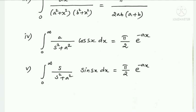Result 4: integral from 0 to ∞ of [1/(a²+x²)]·cos(xx) dx equals (π/2)·e^(−ax). Result 5: integral from 0 to ∞ of [s/(s²+a²)]·sin(xx) dx equals (π/2)·e^(−ax).